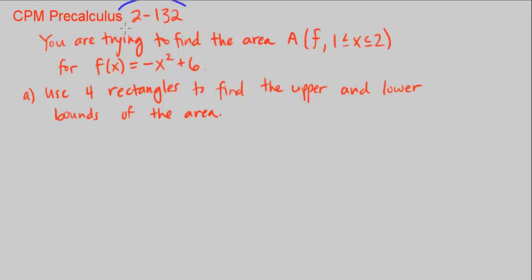This is CPM Pre-Calculus Chapter 2, number 132. Here we're trying to find the area between 1 and 2 between our function f(x) and our x-axis. So we want to use, in part A, four rectangles to find the upper and lower bounds. That means the over-approximation and the under-approximation.